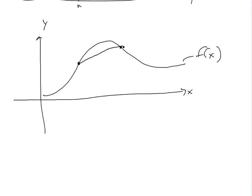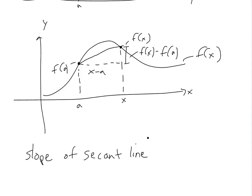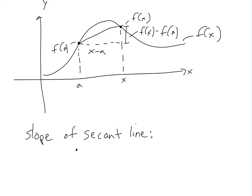We'll draw a secant line. We'll call one point x, and the other point a. The horizontal distance between them is x minus a, the height at x is f of x, and the height at a is f of a. So the vertical distance is f of x minus f of a. The slope of the secant line — we'll call it m — is the ratio of the difference in height to width: m equals f of x minus f of a, all over x minus a.